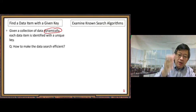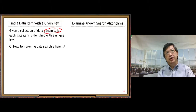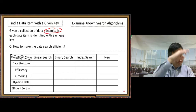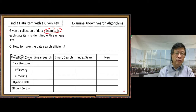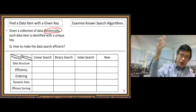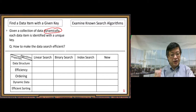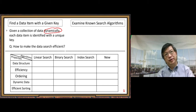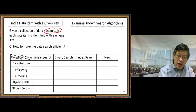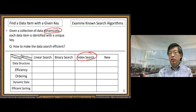Let us examine known search algorithms and try to get some ideas from them. Let me draw a table listing all the known algorithms, while also getting ideas for our new search algorithm. There are four columns: linear search, binary search, index search, and the new one. We are familiar with linear search and binary search and have learned their properties.